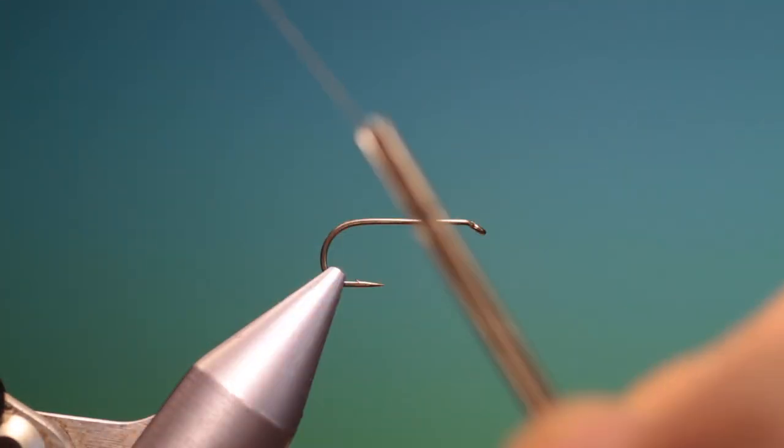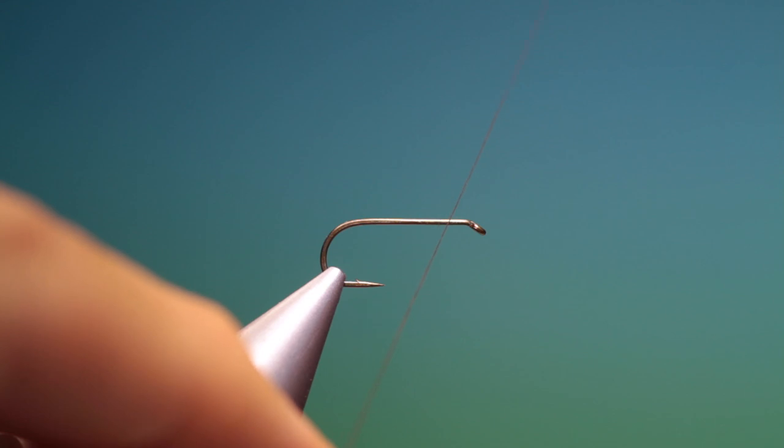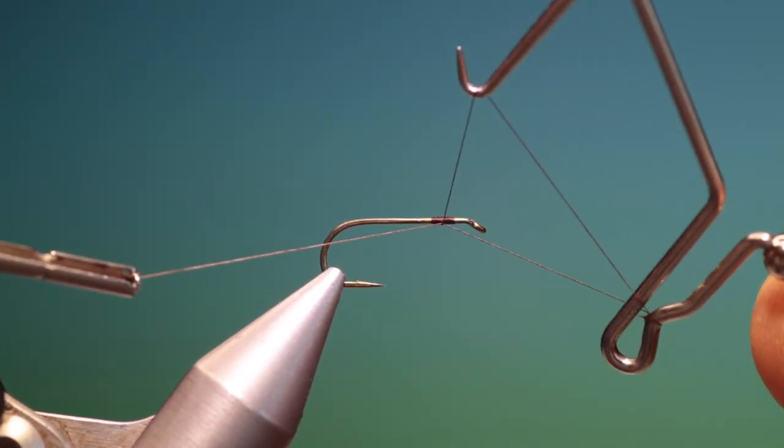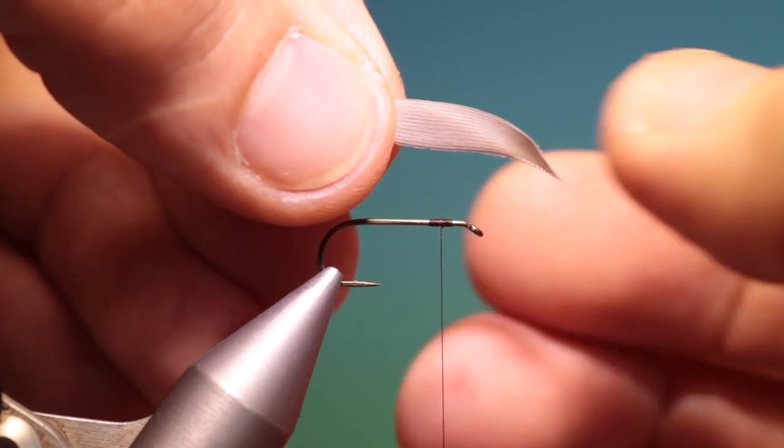So I've got sheer 14-0 brown and just attach a little ways behind the hook eye and go a little ways back, remove that and then I want to go forward again. Now what I want to do is put a stopper in. Just there. This will stop your thread moving when you do the pinch wrap. So I've put the two quill slips back to back.